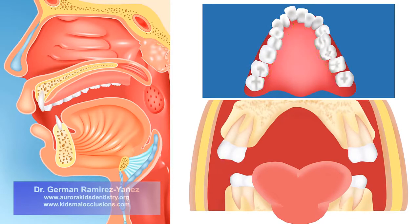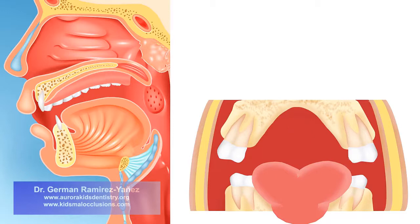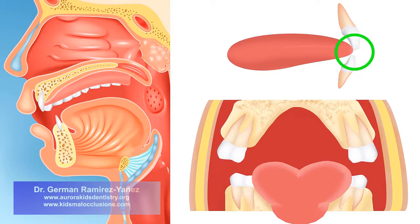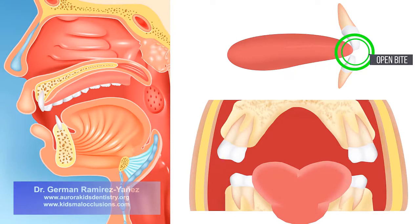Every time you swallow — between 1,600 to 2,400 times per day — the tongue positions low, staying away from your palate. That forces the tip of your tongue to position between your upper and lower front teeth, pushing your front teeth outward. With the tongue resting on the floor of the mouth and the tip between your front teeth, your upper and lower front teeth do not touch when you close your mouth — this is called an open bite.